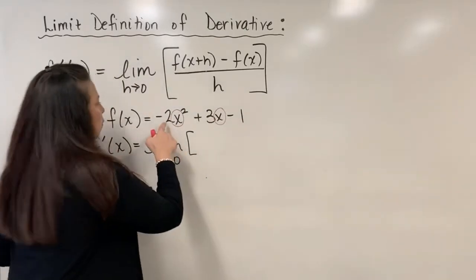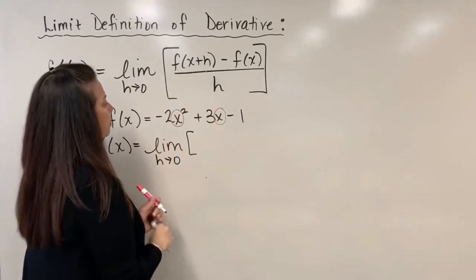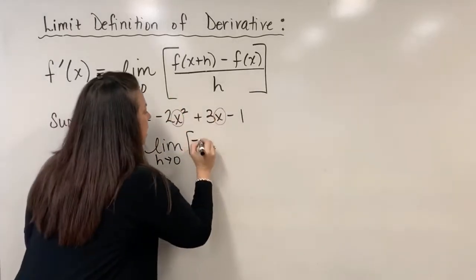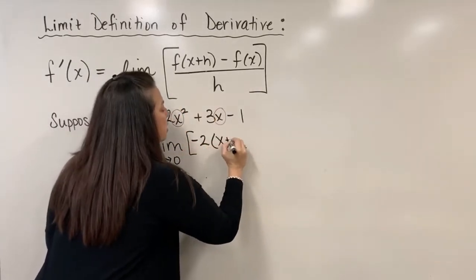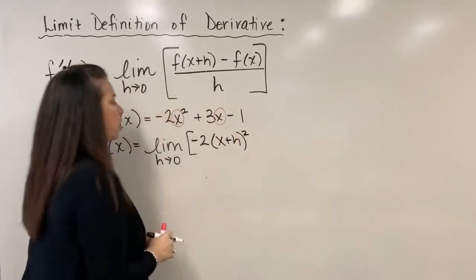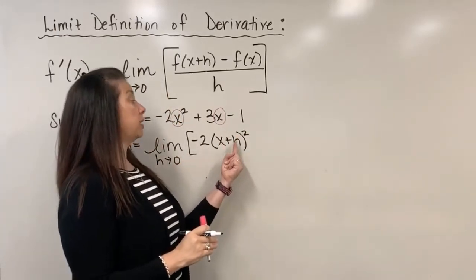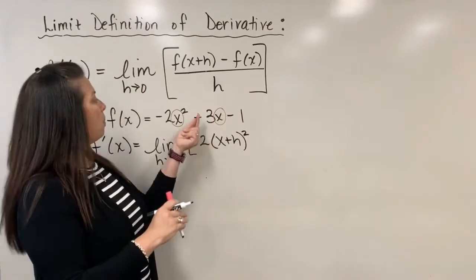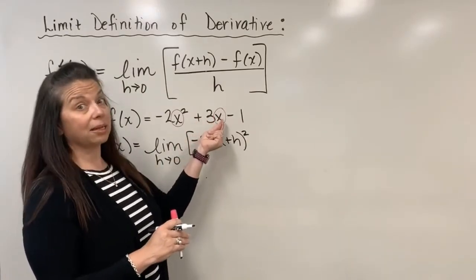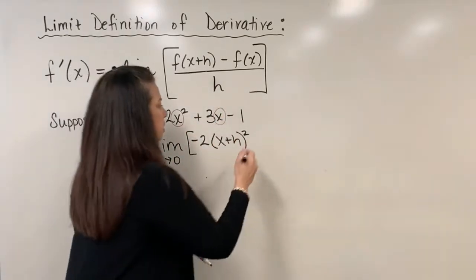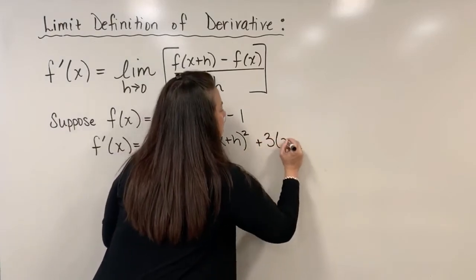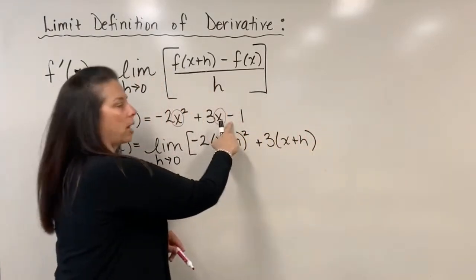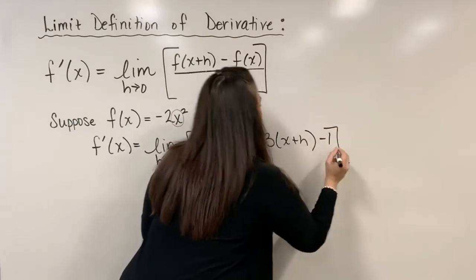So we have negative 2 times — where we had x squared, we now have x plus h quantity squared — so negative 2 times x plus h quantity squared, plus 3 times x plus h, and then subtract 1 per the formula.